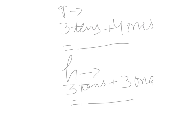Part g is three tens plus four ones. Three tens equal thirty and four ones equal four, so thirty plus four makes thirty-four. Three tens plus four ones makes thirty-four.